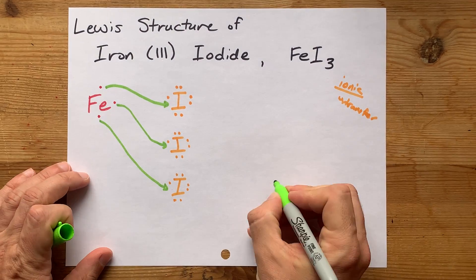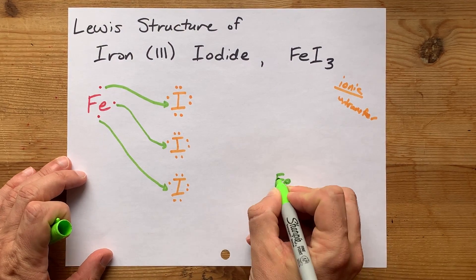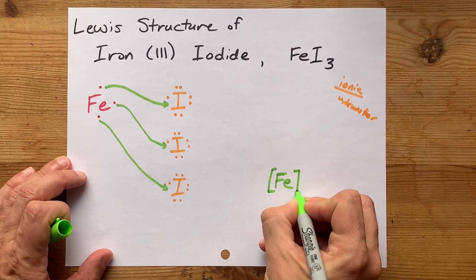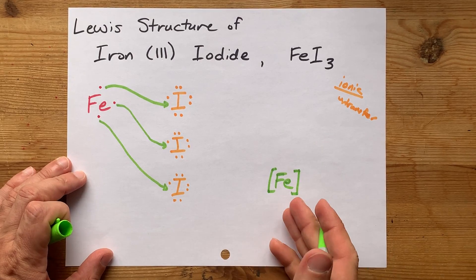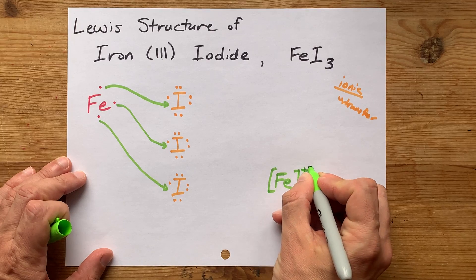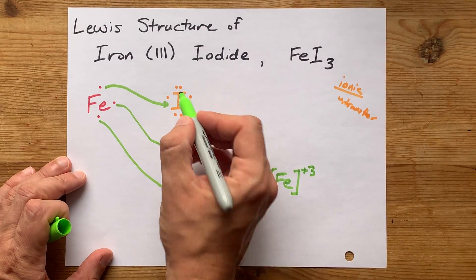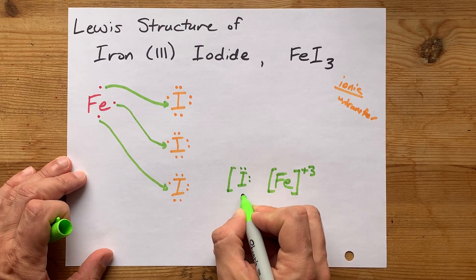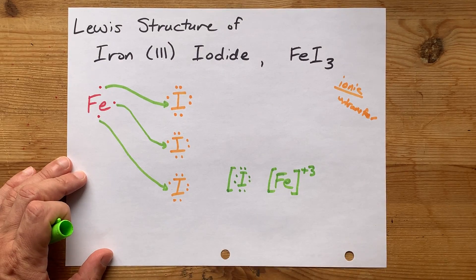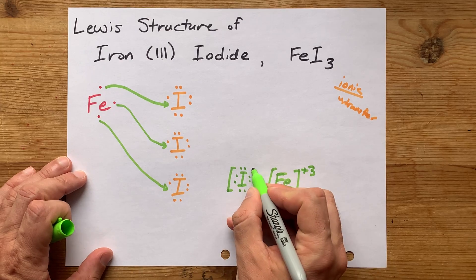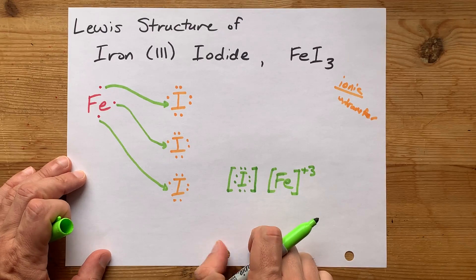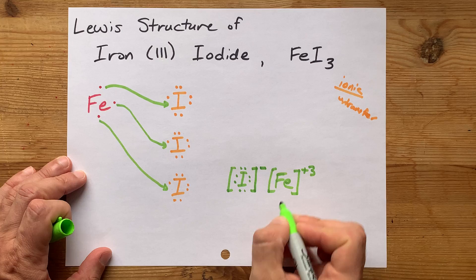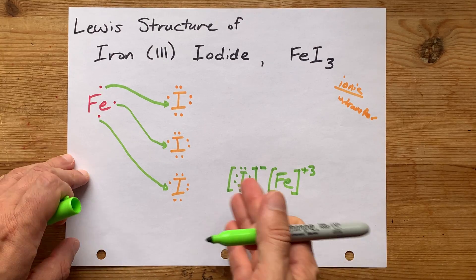The complete Lewis structure for this is an iron atom with no valence electrons written around it. That's no dots. And a plus 3 charge. The iodines, on the other hand, will have their 7 valence electrons plus an extra for the extra one that it got from iron. Give it a minus charge because it has 1 extra electron.